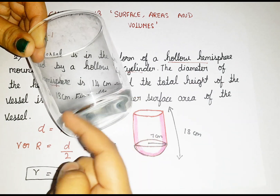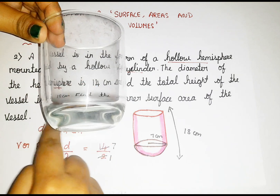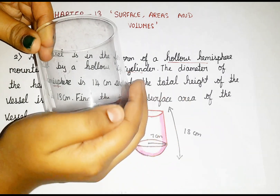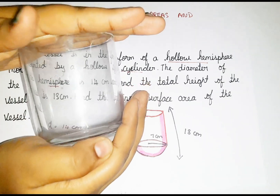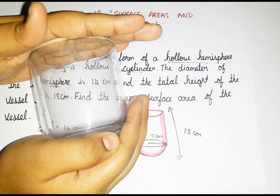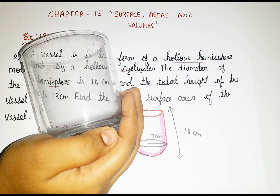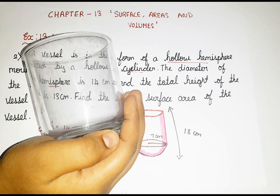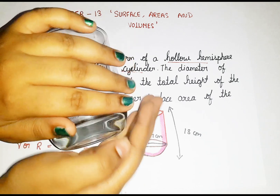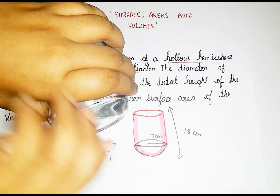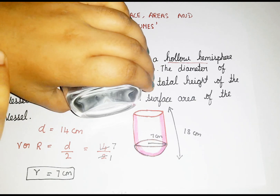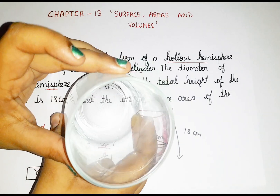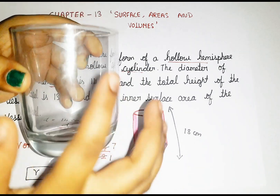This part at the bottom is a hemisphere. And the main body is a cylinder. From inside you cannot see the shape clearly, but from outside you can see the hemisphere at the bottom and the cylinder above it. So a glass cup is made up of a cylinder as well as a hemisphere.